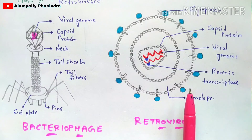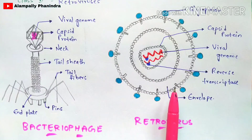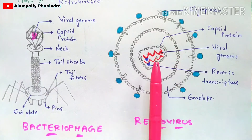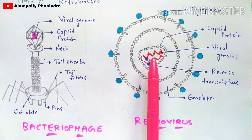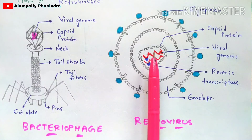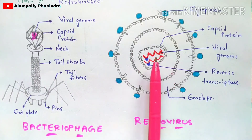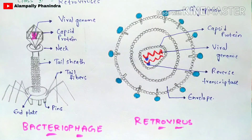In the case of the retrovirus — COVID-19 may be an example, though this is an assumption — the capsid protein surrounds the viral genome. Once it enters the body, the viral genome, whether DNA or RNA, is translated into proteins. These proteins are harmful to the body.